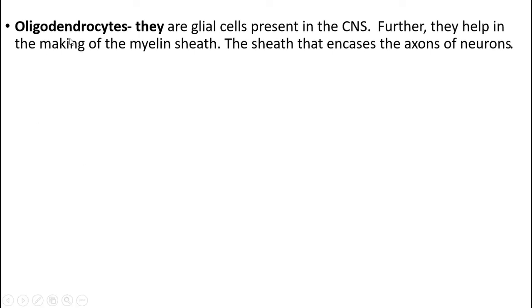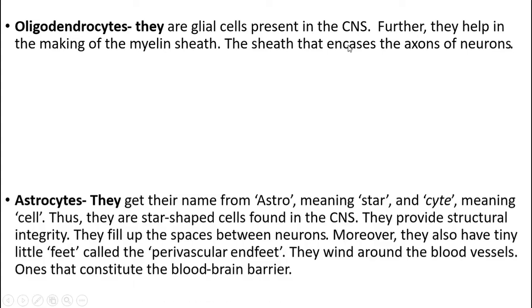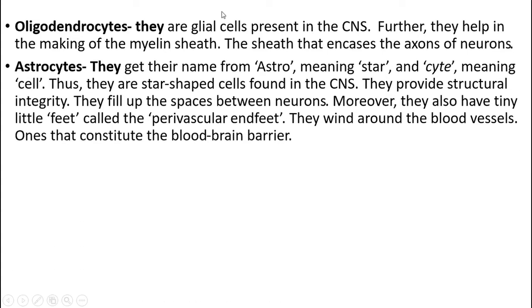Second is oligodendrocytes. They are glial cells present in the central nervous system. They help in making the myelin sheath — the sheath that ensheathe the axons.